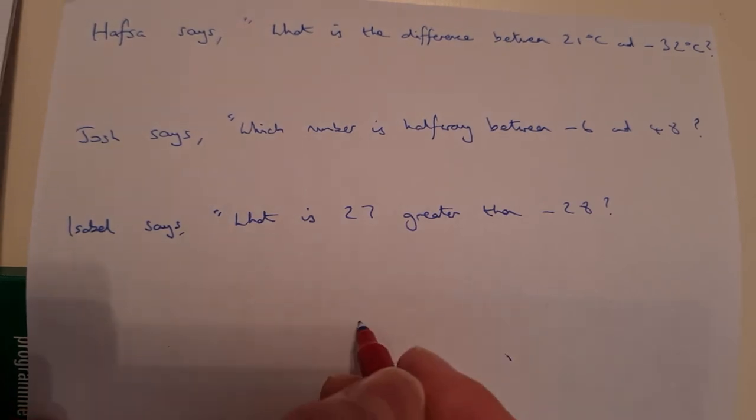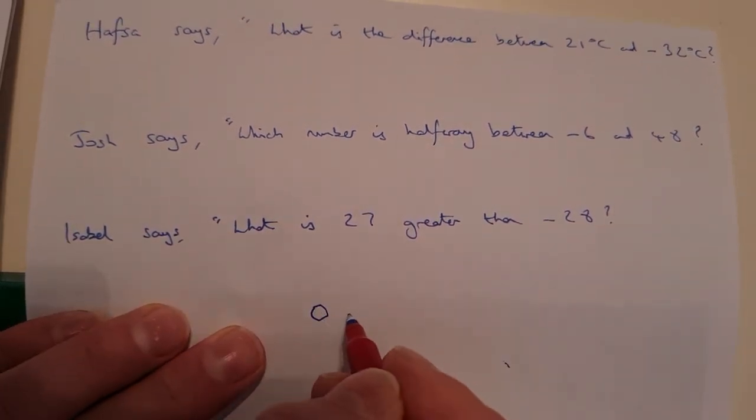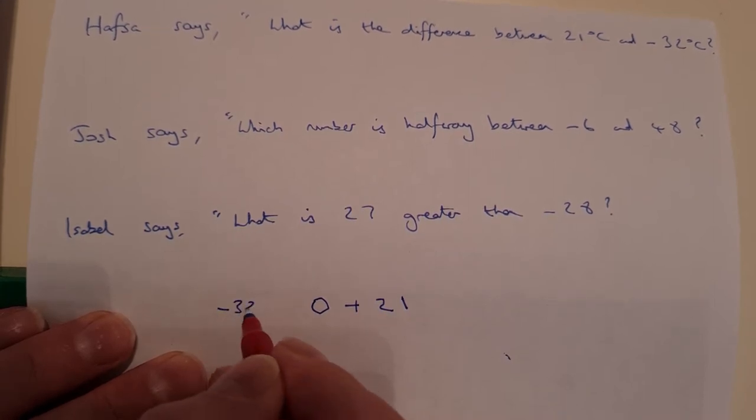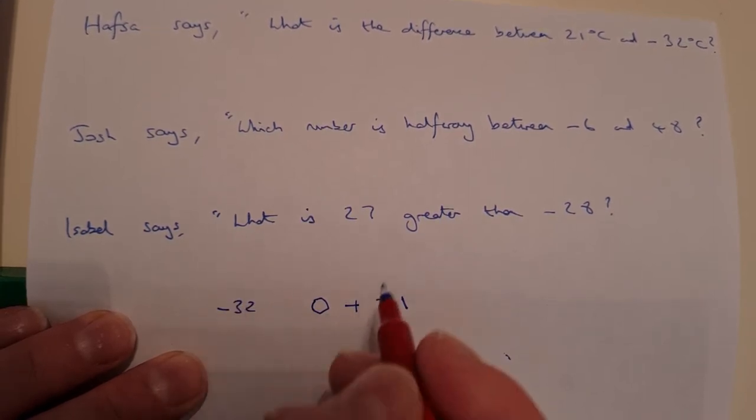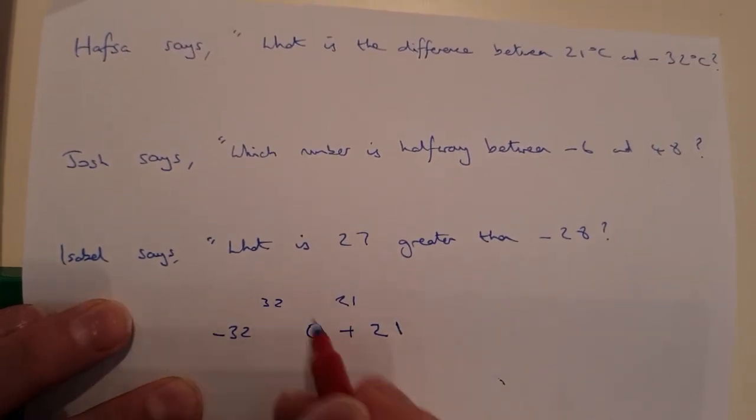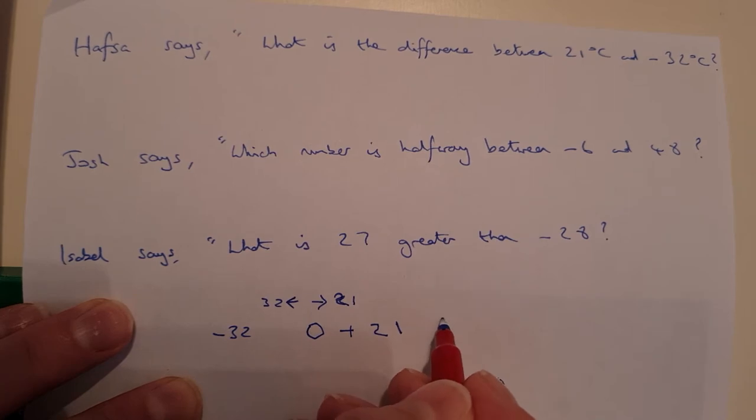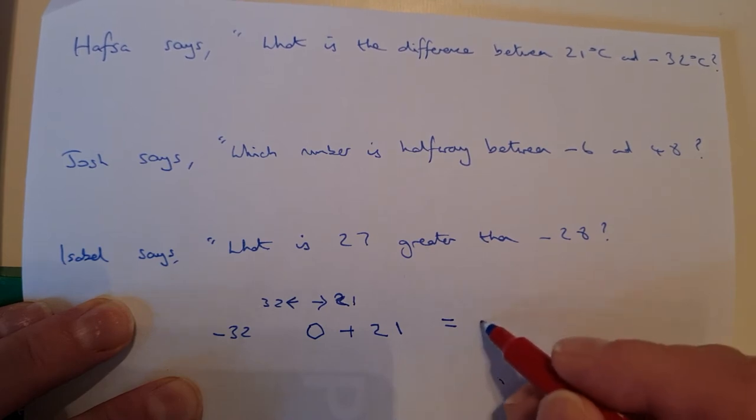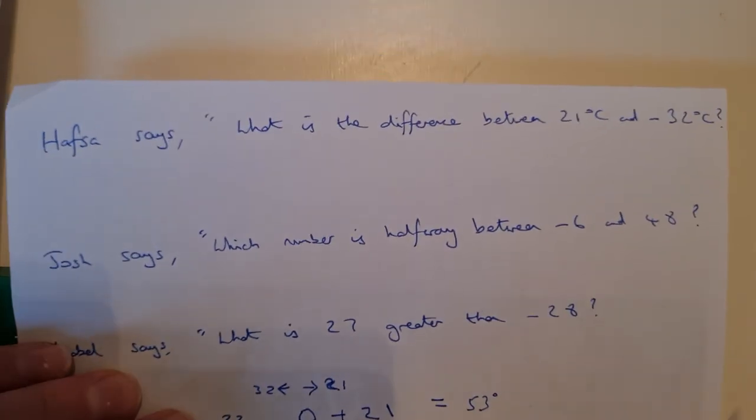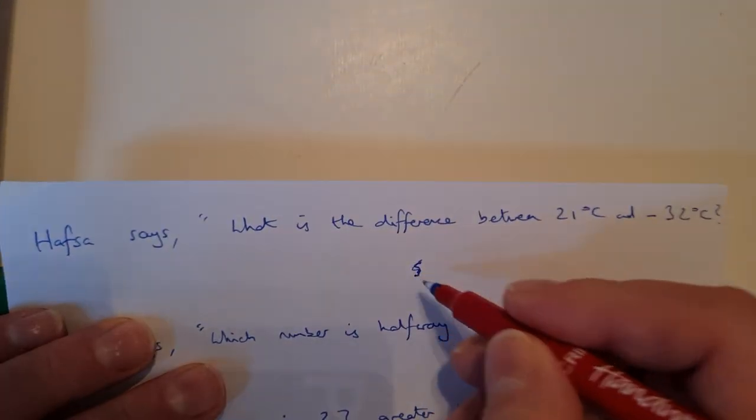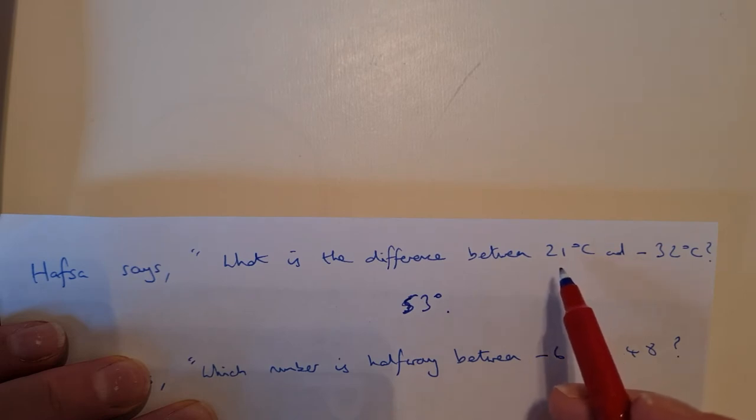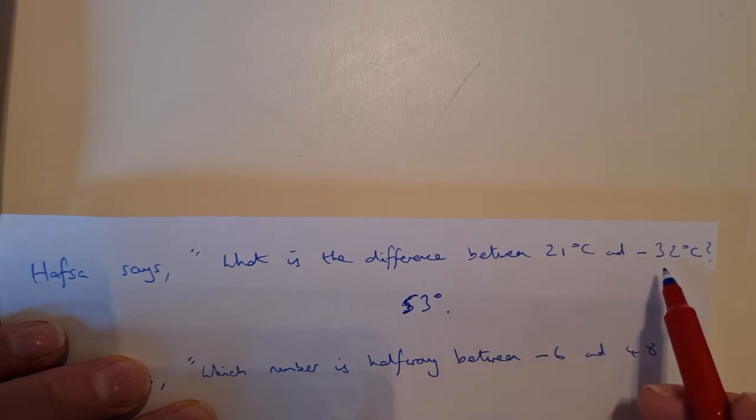Well, if 21 is positive, if my 0 is there, I know I've got 21 above 0 and I've got minus 32, so 32 below 0. So I've got 21 on this side and I've got 32 on that side, on either side of the 0. So what would the distance between those two be? I would just simply put them together. So 32 on one side, 21 on the other side. That gives me 53 degrees. I've got 21 above 0, 32 below 0, I add those two together.